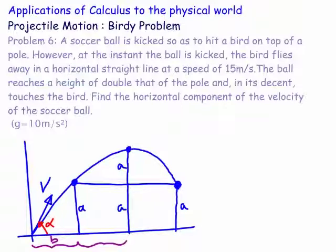Let's call these distances d and d — they're equidistant because we know the symmetry of projectile motion.